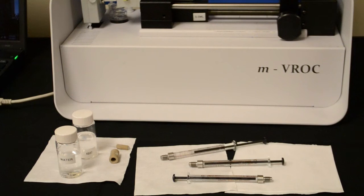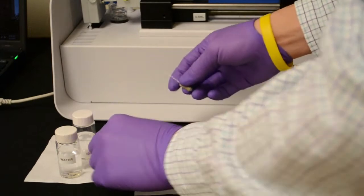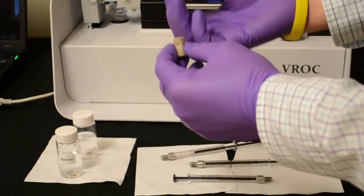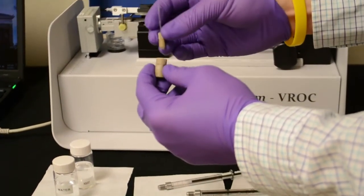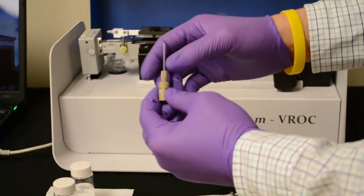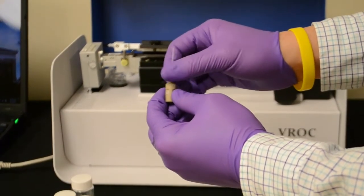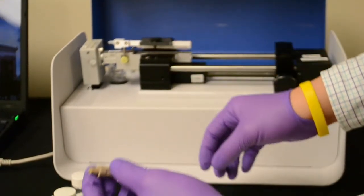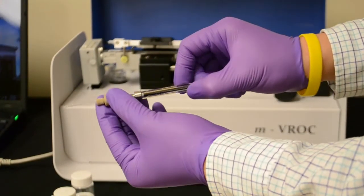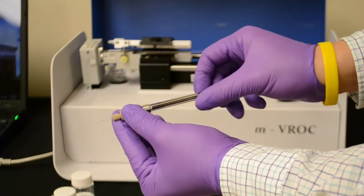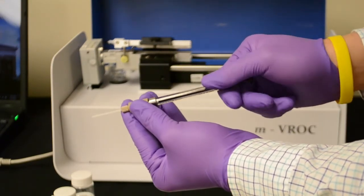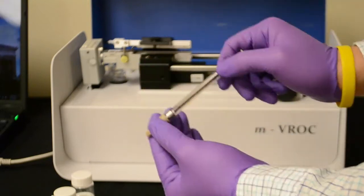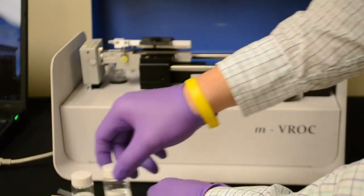Before we start to set up our equipment, let's load the water sample into the glass syringe. First, you would secure the plastic needle onto the union. Then, you would assemble the union onto your glass syringe. Once the syringe is secured, you may start drawing your sample.